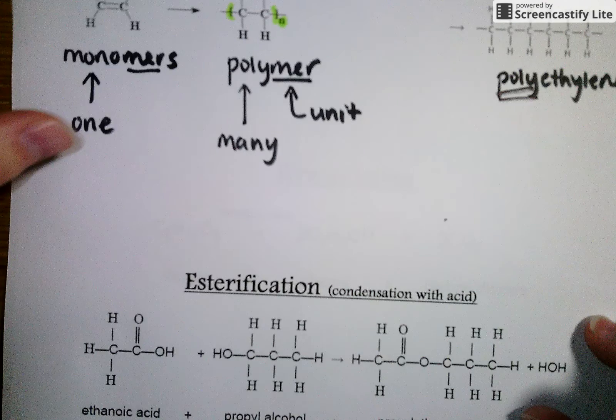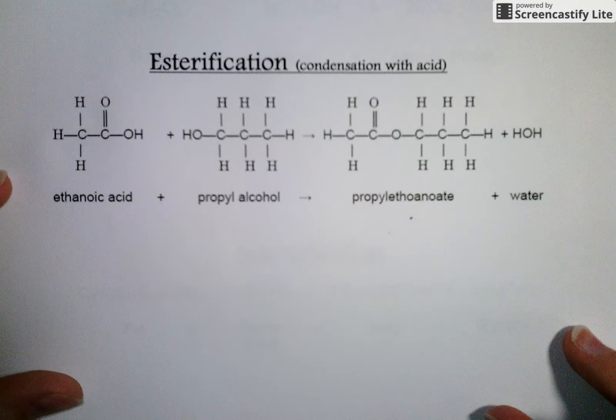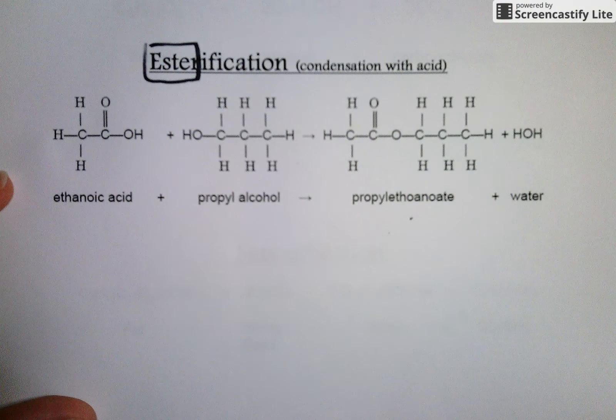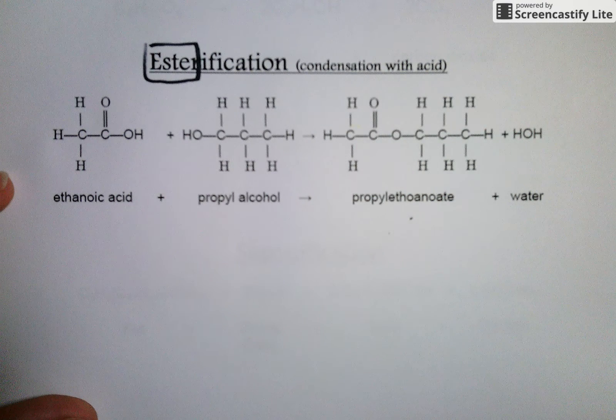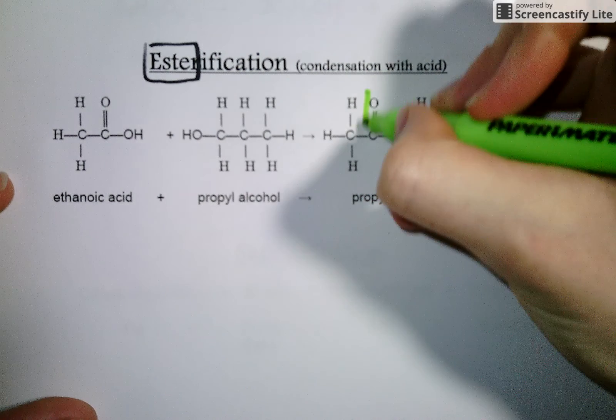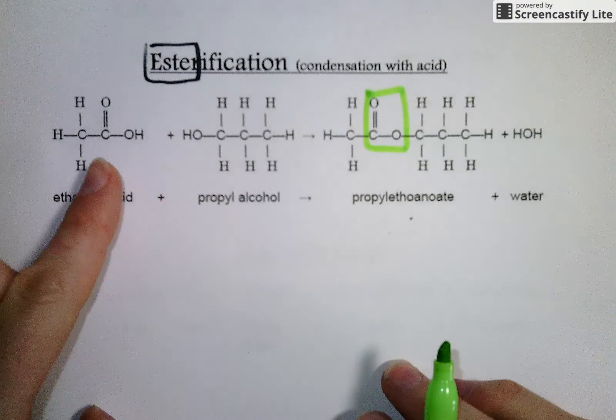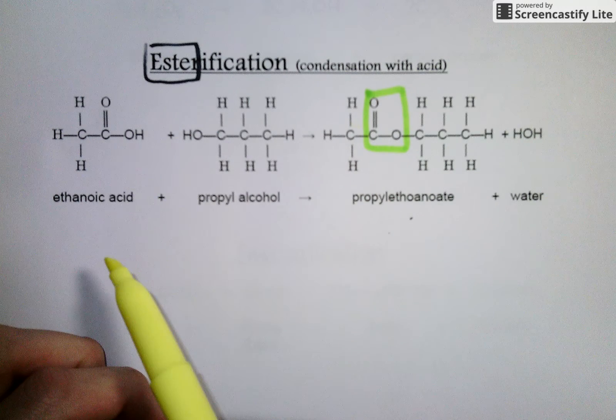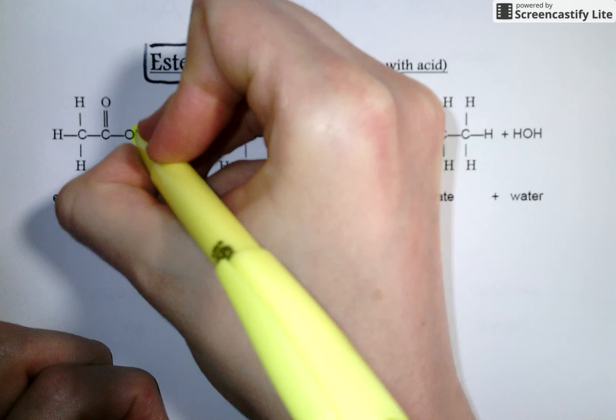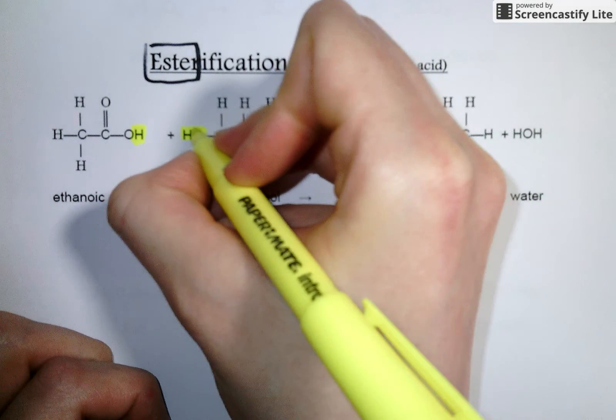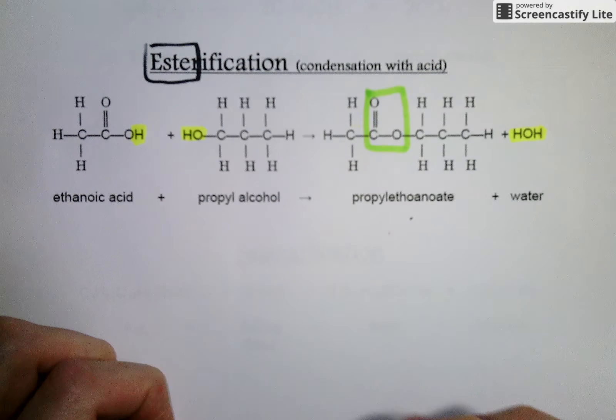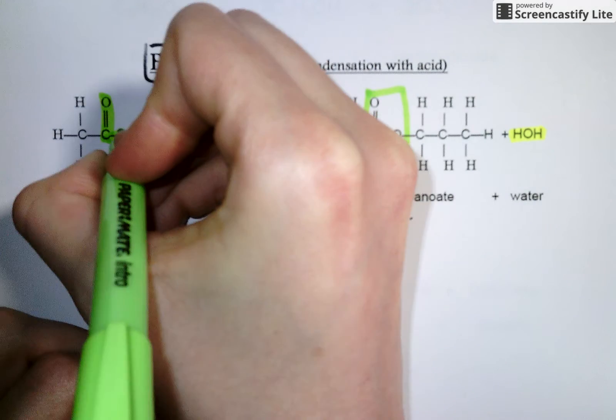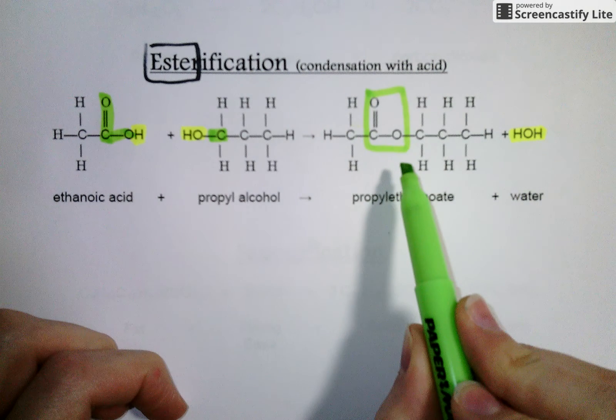The last reaction type that we'll talk about in this video is esterification. And you can see right in the name that this is going to be creating esters. Just like polymerization created polymers, this process is going to create esters. And one very quick way to get to an ester functional group, which we see right here, is to stick together an organic acid and an alcohol. And the way that that works, when these two molecules are put together with enough heat, we actually see the organic acid lose its H and the alcohol lose its OH to create water.